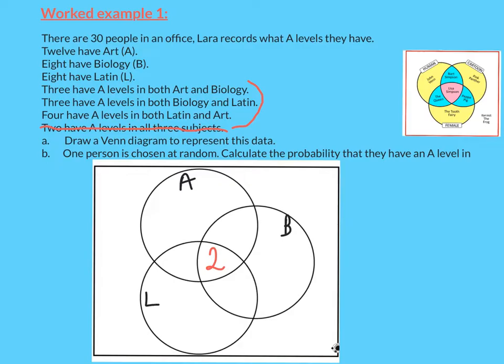Four have A-levels in Latin and art. So Latin and art is all of this bit. I've already got two there, so if there's four in total, there's got to be two more there. Likewise, biology and Latin is this piece here. There's three in total, so you can have one here. And then the same way for art and biology, one here.